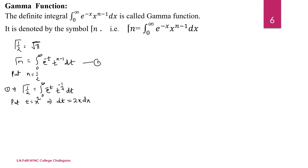The limits also change. When the lower limit t equals 0, then x is 0; upper limit t equals infinity, then x equals infinity. There is no change in the limits. So gamma of 1/2 becomes the integral from 0 to infinity of e to the power minus x squared.